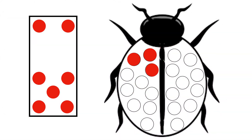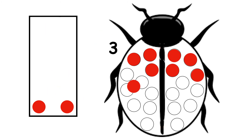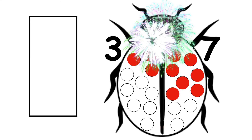Ladybird has 5 spots. How many more does she need to make 10? 1, 2, 3, 4, 5, 6, 7. 3 and 7 make 10.